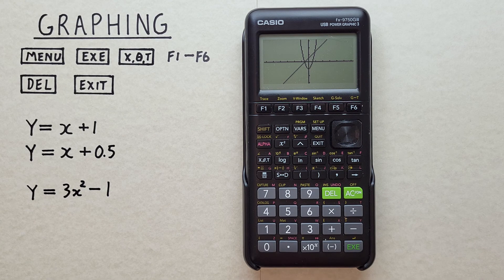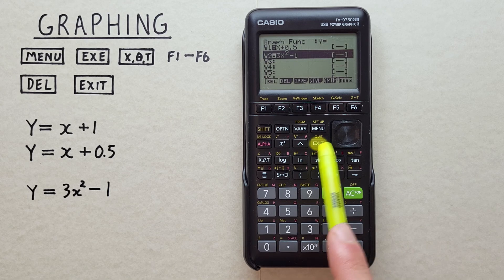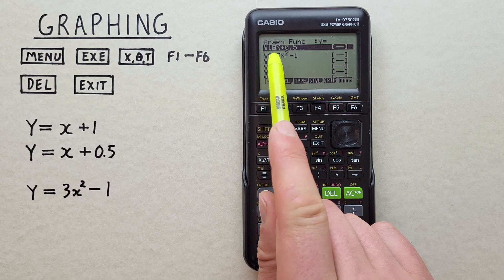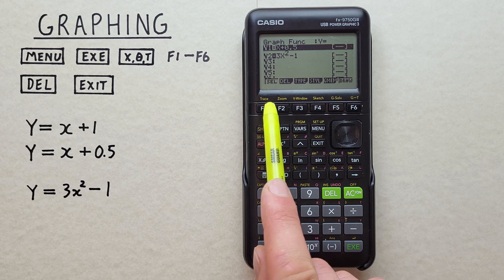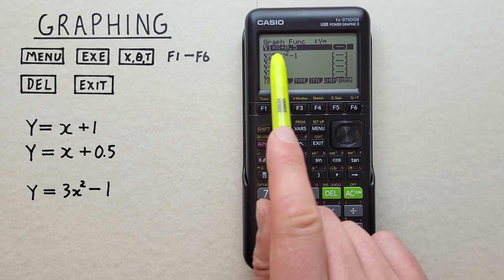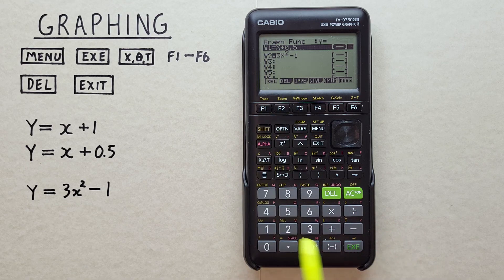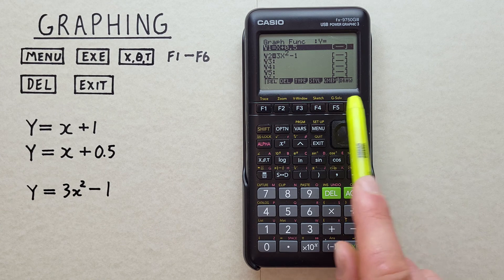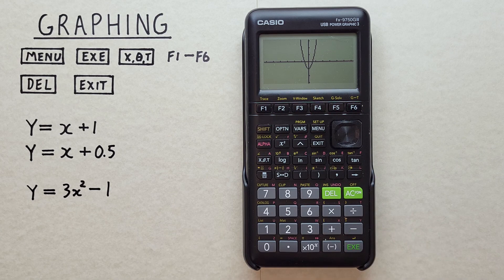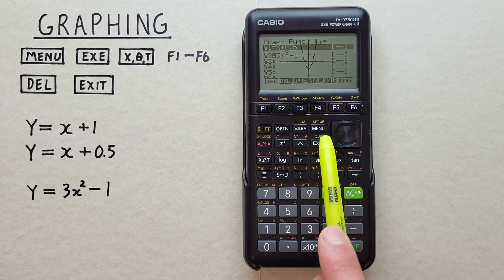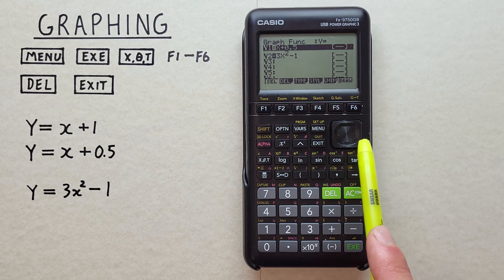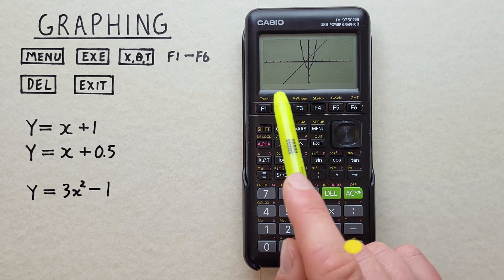If we wanted to turn off a function but not delete it, we can do that in our function menu by scrolling over to it. And you see the highlighted equal sign there beside the Y equals 1. If we choose F1 for select, we can select that on or off. We've hit it once, the equal sign is no longer highlighted. Now if we hit EXE or draw, we'll do F6 for draw, our line is no longer visible. To turn it back on, we just go back and hit F1 select to re-highlight that equal sign. And now both functions are visible.